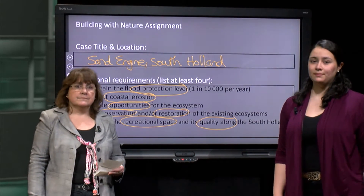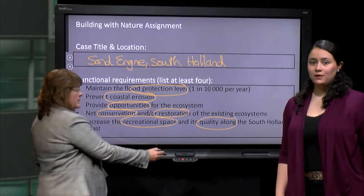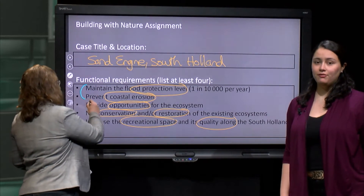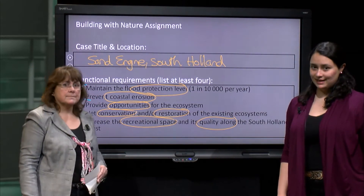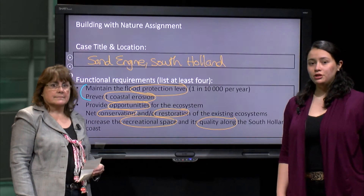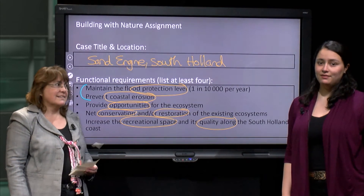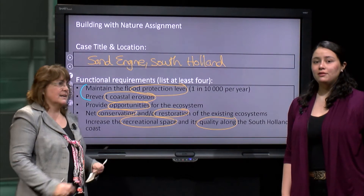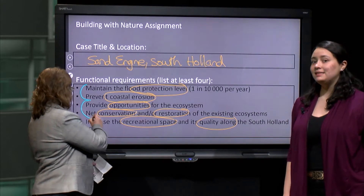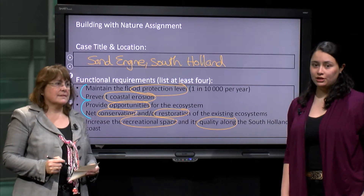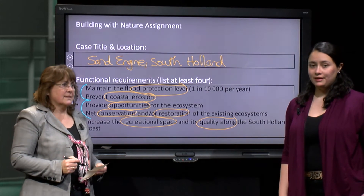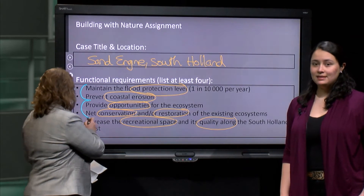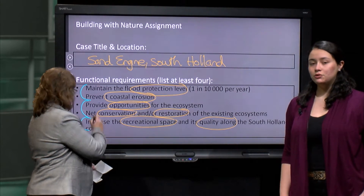And even social requirements such as recreational space and its quality along the South Holland coast. You may notice that the first two items are explicit engineering requirements of the primary client — in this case, the operational arm of the Dutch Ministry of Infrastructure and Environment. In contrast, the third and fourth requirements implicitly represent the ecological design principles underpinning building with nature. Finally, the fifth item is an explicit social requirement.